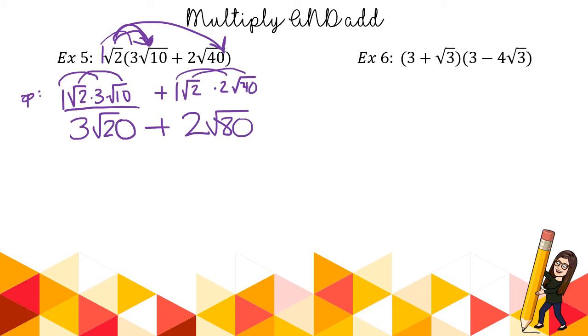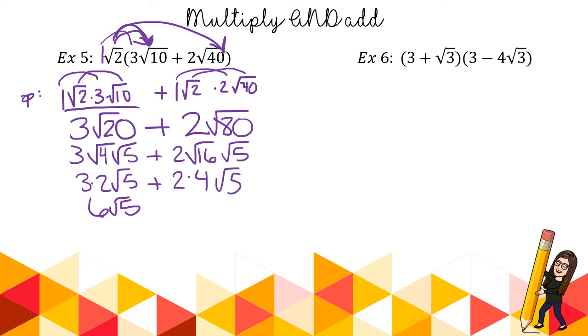Now I can't add these. They are unlike. So I need to see if I can make them like. I need to simplify. 20 breaks down to 4 and 5. 4 breaks down to 2. 6√5. Alright. Let's look at that 80. The largest perfect square that fits into 80 is 16. 16 fits in 5 times. √16 is 4. 2 times 4 is 8. Oh, look. Now I can add them. We add the numbers out front. Here's where students a lot of times forget the adding and subtracting rules. If I have 6√5s plus 8√5s, I have 14√5s. It stays √5.